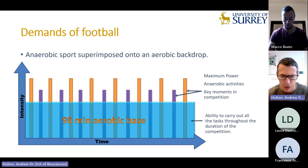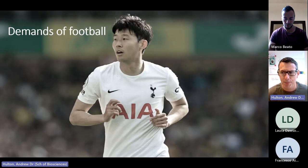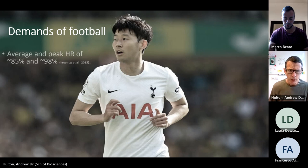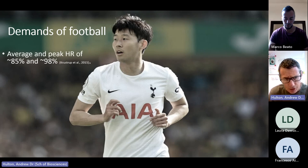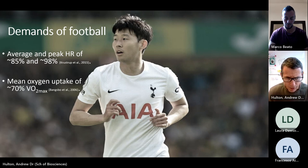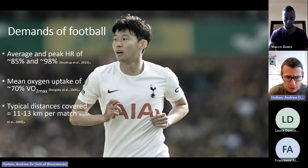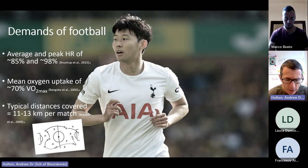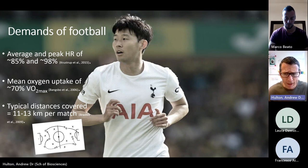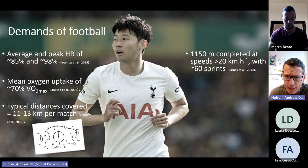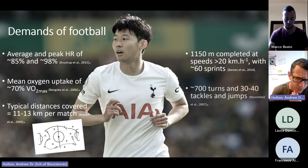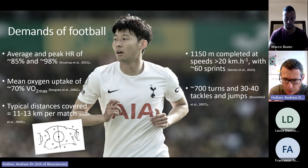Looking at the specific demands of football, we have average heart rates around 85–98% and mean oxygen uptake around 70% VO2 max. Typical distances are between 11 and 13 kilometres per match, dependent on position and tactical restraints. Players cover over 1,000 metres at really high speeds with approximately 60 sprints, around 700 turns, and 30–40 tackles and jumps throughout the match.